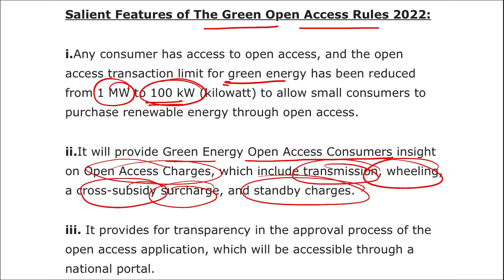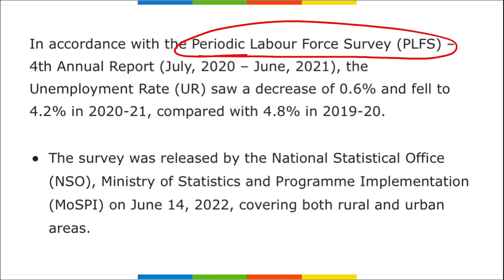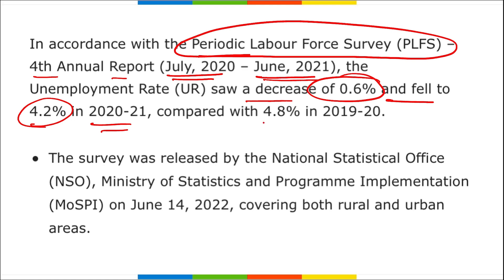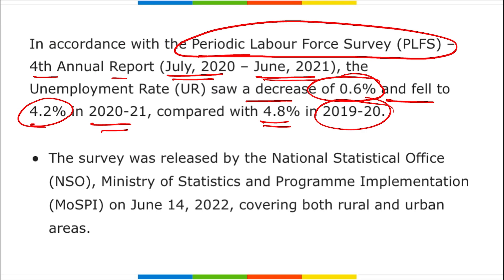The fourth edition of the Annual Periodic Labour Force Survey was released for the period July 2020 to June 2021. The unemployment rate saw a decrease of 0.6% and fell to 4.2% in 2020–2021, compared to 4.8% in 2019–2020. This survey was released by the NSO — National Statistical Office — under the Ministry of Statistics and Programme Implementation.